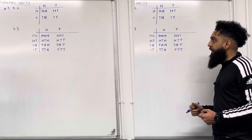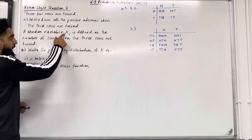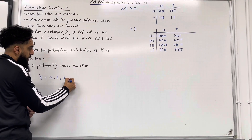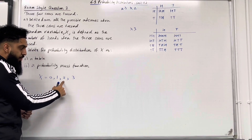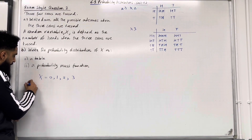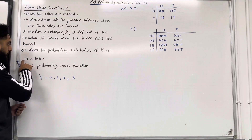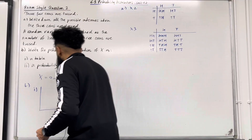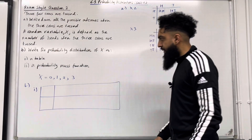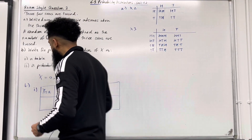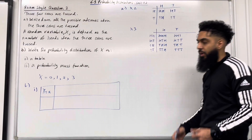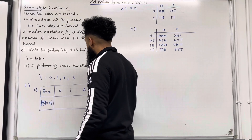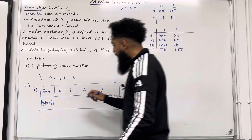Moving on to part B: a random variable X is defined as the number of heads when three coins are tossed. X takes on values 0, 1, 2, or 3 — you could have zero heads, one head, two heads, or three heads. Part B asks us to write the probability distribution of X as a table.